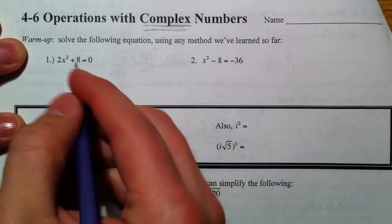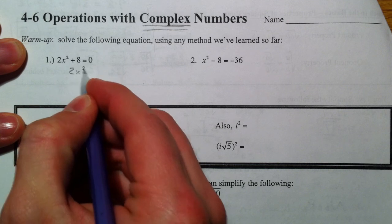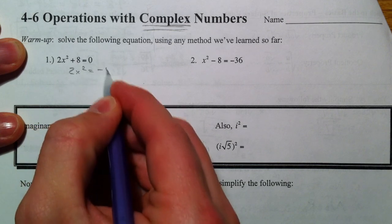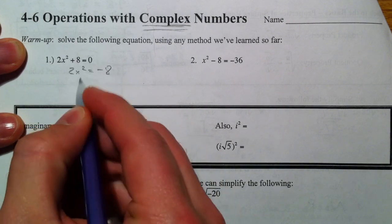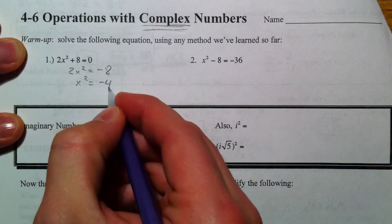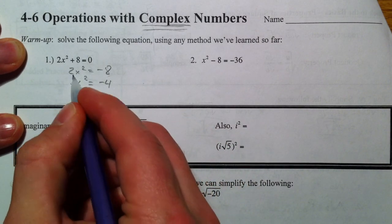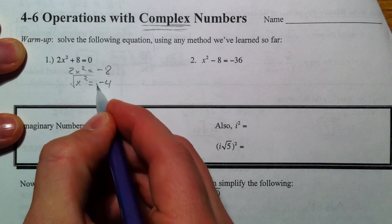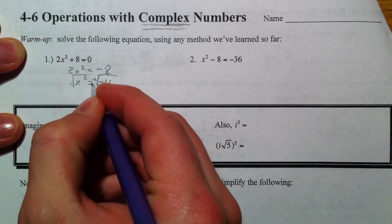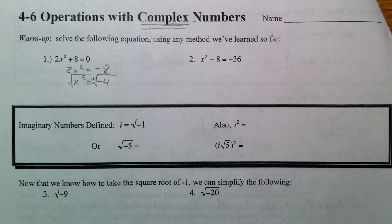2x² + 8 = 0. We've done things like this before, where you subtract 8, get x² by itself. If you divide by 2, you get negative 4. Then we take the square root of both sides, remembering to add the plus or minus. And up until today, you would say you can't take the square root of a negative, and so you'd stop there.